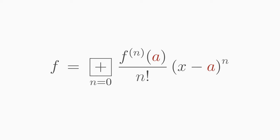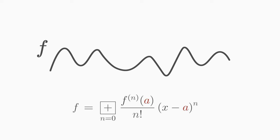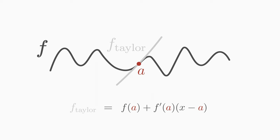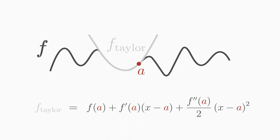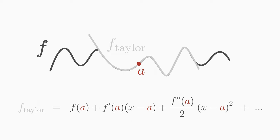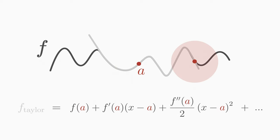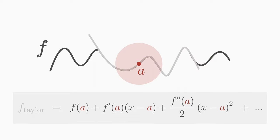You surely know the Taylor expansion, with which we can approximate a function f at a point by a Taylor series. The more terms we take in the Taylor series, the better the approximation becomes in the vicinity of the chosen point. The Taylor series represented by this gray function is a good approximation of f near the expansion point. However, if we move further away from the point, the Taylor series is not a good approximation there. So the Taylor expansion is a method with which we can approximate a function only locally.